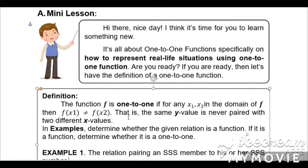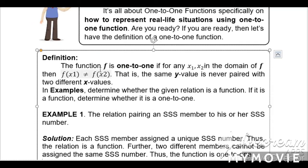The function f is one-to-one if for any x₁ and x₂ in the domain of f, then f(x₁) is not equal to f(x₂). That is, the same y value is never paired with two different x values. In examples, determine whether the given relation is a function. If it is a function, determine whether it is one-to-one.